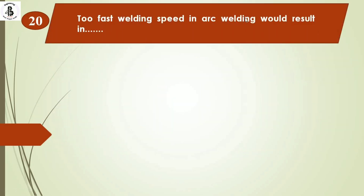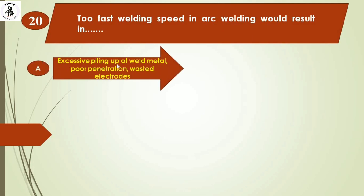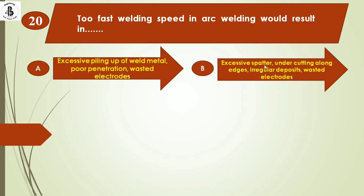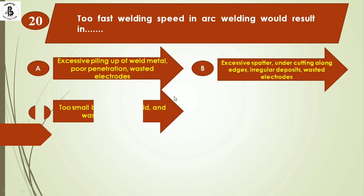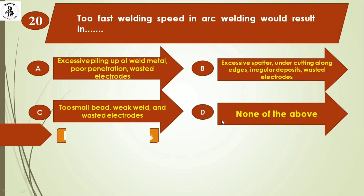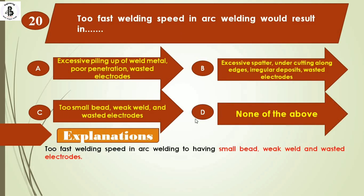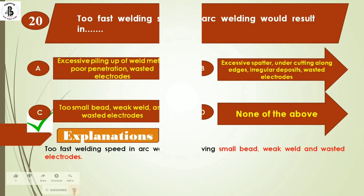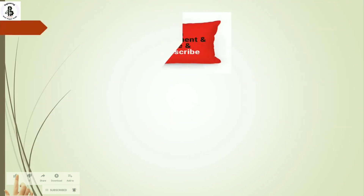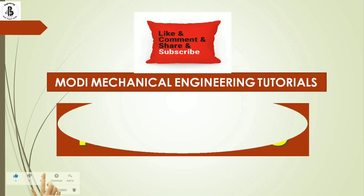Next question: too fast welding speed in arc welding would result in — option A: excessive peeling up of weld metal, poor penetration, wasted electrodes. Option B: excessive spatter, undercutting along edges, irregular deposits, wasted electrodes. Option C: too small bead, weak weld, and wasted electrodes. Option D: none of the above. Too fast welding speed results in a small bead, weak weld, and wasted electrodes. Right answer is option C. I hope you understood this — if you like it, subscribe and share Modi Mechanical Engineering Tutorials. Thank you so much and keep watching.